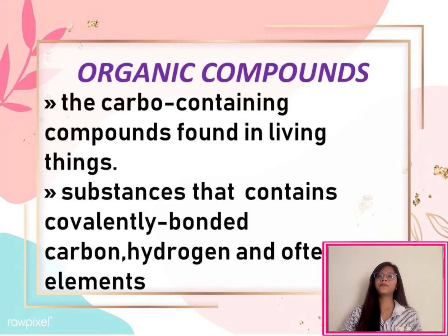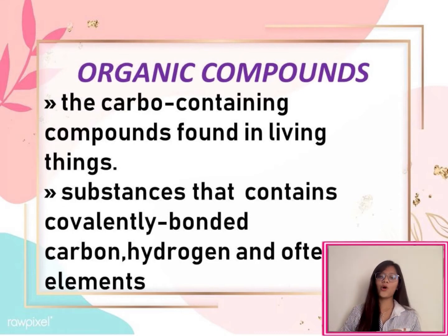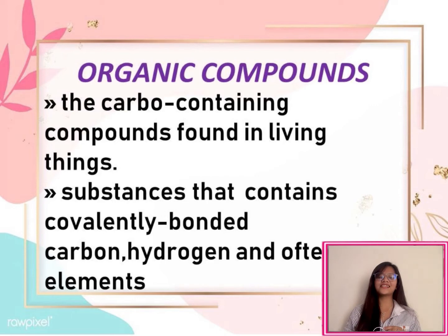But before we proceed to our main topic, let us define what an organic compound is. Organic compounds are the carbon-containing compounds that are found in living things. They are substances that contain covalently bonded carbon, hydrogen, and often other elements.